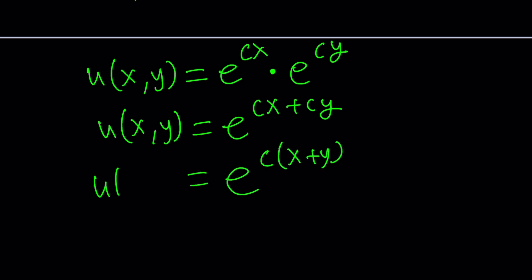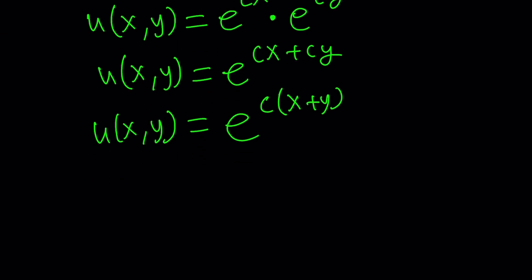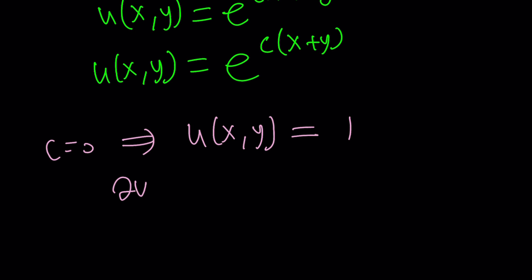Now, one thing that's pretty interesting is if c is 0, we get u of xy equals e to the power of 0, which is 1. So 1 is actually a solution, because any constant is a solution. The reason being, if you differentiate a constant with respect to any variable, you always get 0, and 0 equals 0. Remember, the original problem was partial of u with respect to y and partial of u with respect to x were equal, and yes, this is satisfied by that.